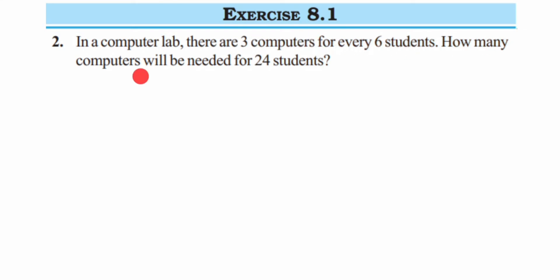For this question, I'm going to follow the unitary method. So what is this unitary method? Here we're going to find out for one student first, and then followed by finding out for 24 students. So let's start doing this.